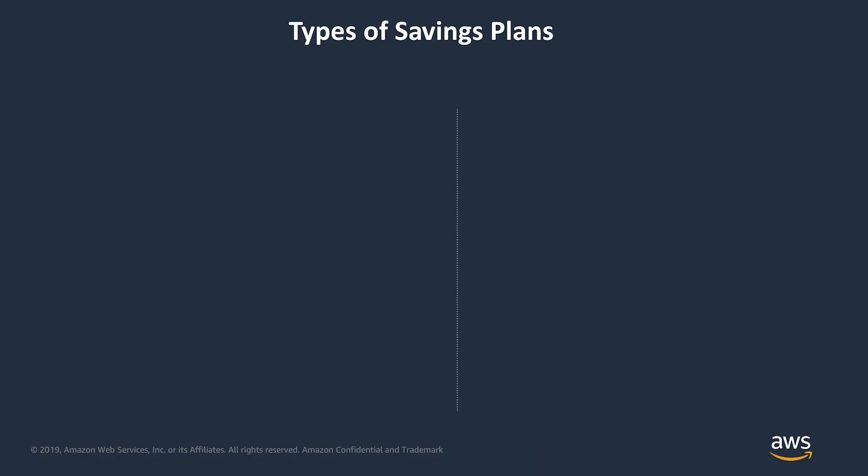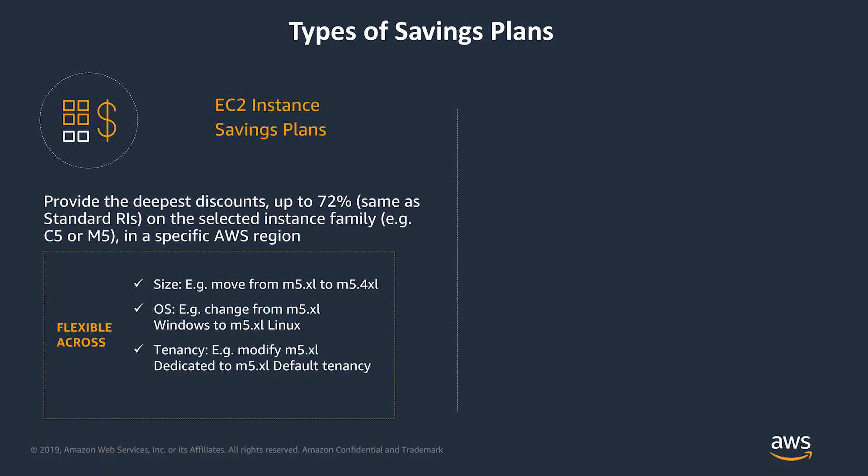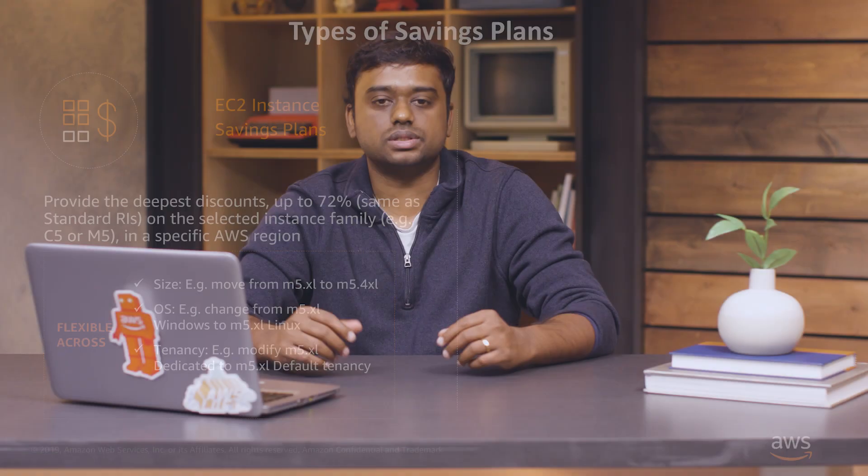AWS offers two types of Savings Plans. First, EC2 Instance Savings Plans. With EC2 Instance Savings Plans, you make a commitment to use an individual instance family in a region of your choice, and all that usage benefits from our largest discount of up to 72%.